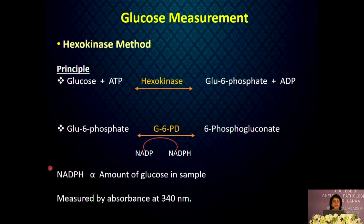When we look at the hexokinase method, glucose is phosphorylated by ATP in the presence of hexokinase. The glucose-6-phosphate is then converted to 6-phosphogluconate in the presence of NADP. The NADPH formed is proportional to the amount of glucose in the sample and its absorbance is measured at 340 nanometers.